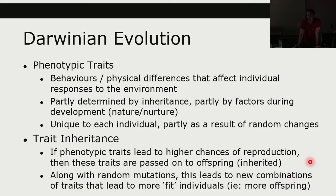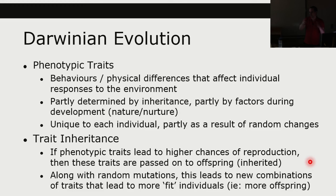If you are a gorilla and you're faster or stronger, statistically over time you have a higher chance of reproduction. Your desirable traits in that environment are going to be passed on. But if you take that same individual and put them in a completely different environment — like the Arctic — they may not survive well. Individuals are only fit with respect to their environment. Take them out of the desert and put them in the jungle, and they may no longer be fit individuals.